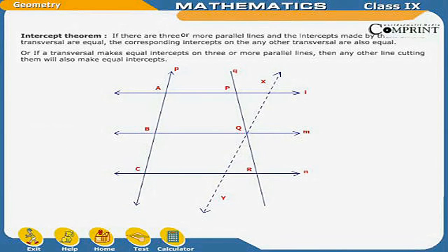Theorem: If there are 3 or more parallel lines and the intercepts made by them on a transversal are equal, the corresponding intercepts on any other transversal are also equal. Or, if a transversal makes equal intercepts on 3 or more parallel lines, then any other line cutting them will also make equal intercepts.